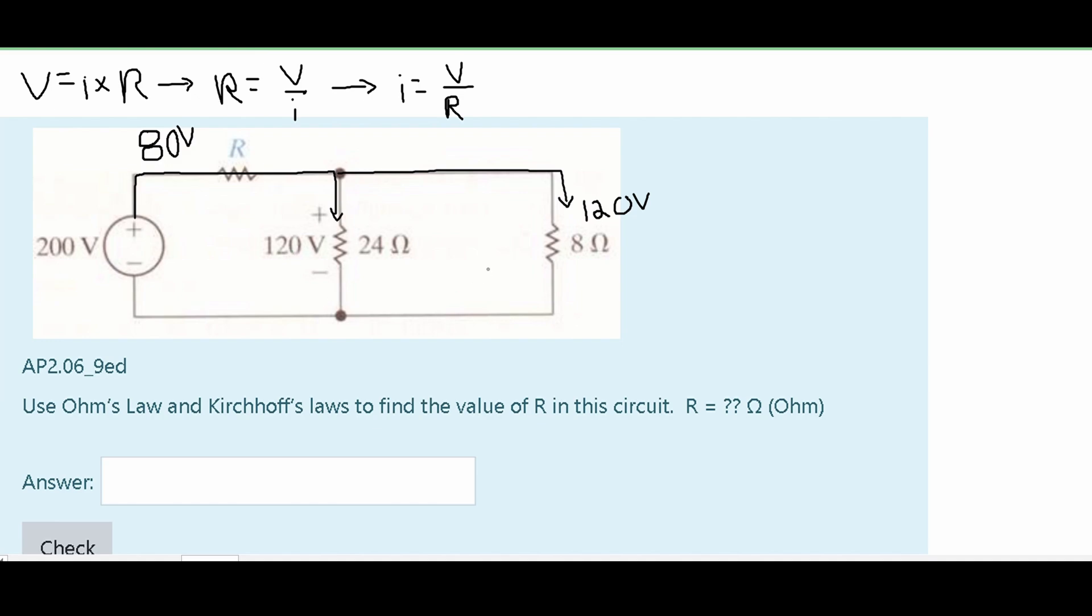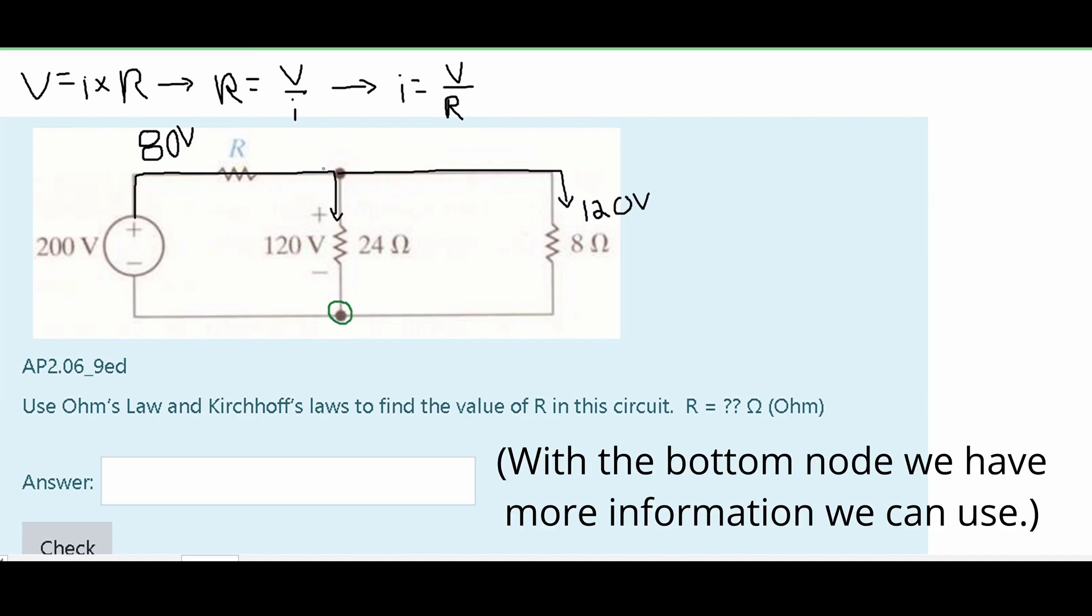To find current, we're going to use Kirchhoff's current law, and Kirchhoff's current law states that the sum of all currents at a node is equal to zero. From previous problems, we know that this is a node and so is this. However, given the circumstance of this problem, we're going to use this bottom node.